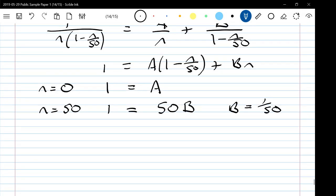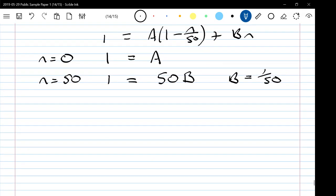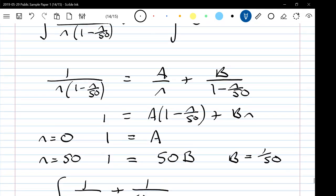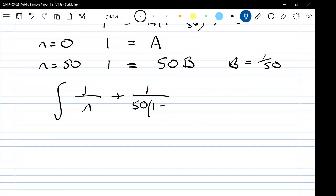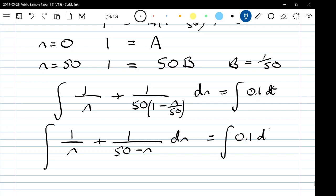Giving us that the integral we started with is the integral of 1 over n plus 1 over 50 times 1 minus n over 50 dn equals the integral of 0.1 dt. I'm going to tidy this up a little bit before I integrate it, so this is 1 over 50 minus n dn equals the integral of 0.1 dt.